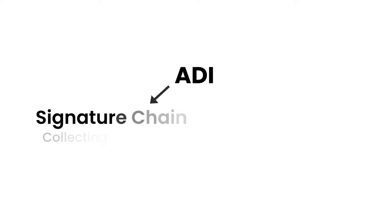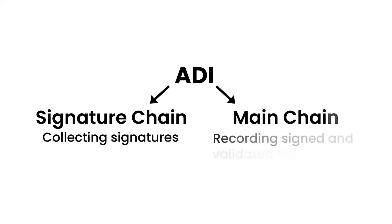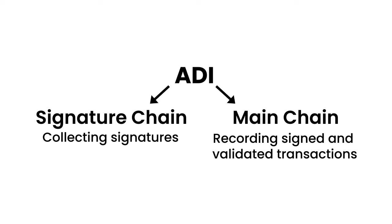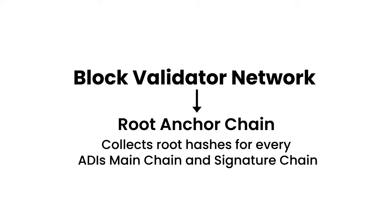To quickly recap: each ADI on Accumulate has a signature chain for collecting signatures and a main chain for recording signed and validated transactions. Each block validator network, which validates transactions for many different ADIs, has one root anchor chain which collects root hashes for every ADI's main chain and signature chain.